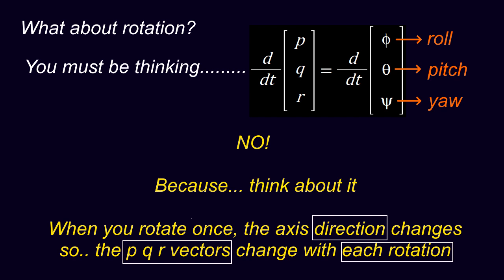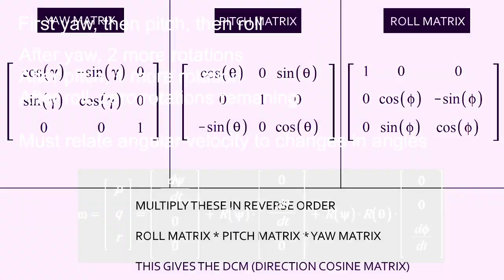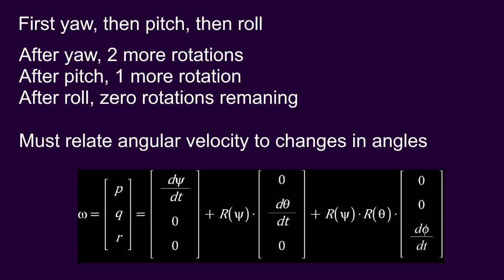Let's recap the matrices of the DCM. We have the yaw matrix, the pitch matrix, and the roll matrix, and when you get the DCM, you multiply them in reverse order. So let's first look at the rotation sequence. We have yaw, then pitch, then roll. So that means after yaw, we have two more rotations—the pitch and the roll. After pitch, we have one more rotation, and after the roll rotation, we're done. So we have to somehow relate this into an equation.